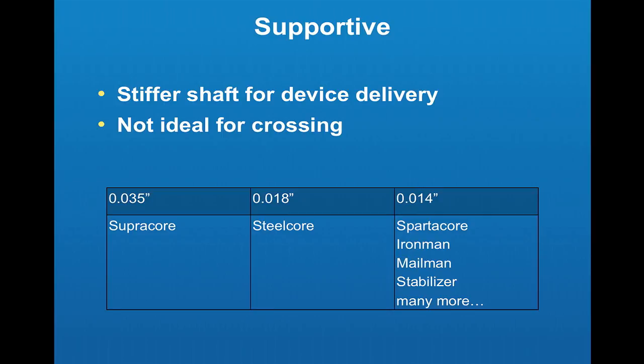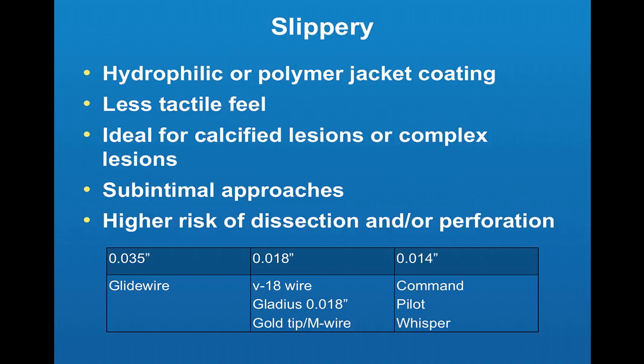Supportive wires have stiffer shafts for device delivery and are not ideal for crossing. Examples include the SuperCore and SteelCore for 0.035 and 0.018, while 0.014 examples include the Spartacore, Ironman, and Stabilizer, among many others.